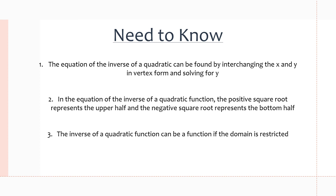In the equation of the inverse of a quadratic function, the positive square root represents the upper half, and the negative square root represents the bottom half. In the example, when I sketch the graph, I drew them in two different colors just to highlight that one was the upper half — the positive square root — and the negative half was in a different color. You'll see that in the example.